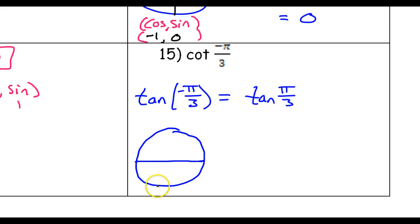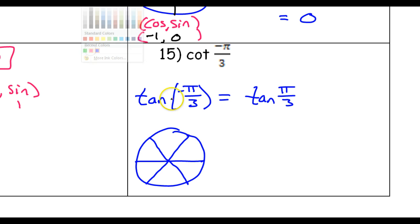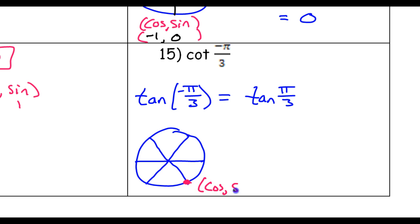Pi is halfway. Pi over three is what you get if you split the top half into three equal parts. We are going to negative pi over three, so that's negative one pi over three — because it's negative, we go clockwise, and this is it. Every point is of the form cosine comma sine on the unit circle, so cosine is the x and sine is the y. In this quadrant, the x value is positive because it's to the right, but sine — the y value — is negative because it's down. So we have a positive cosine and a negative sine.